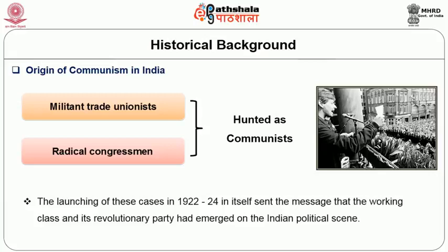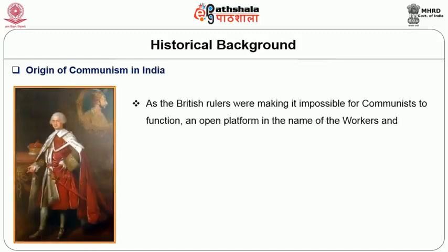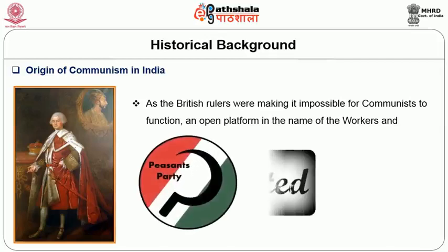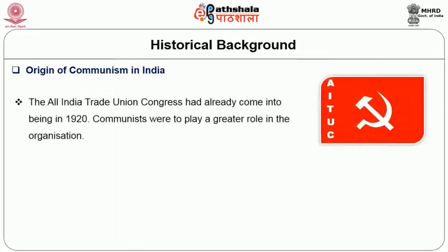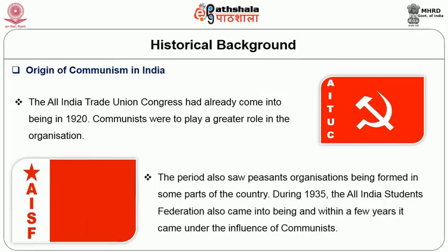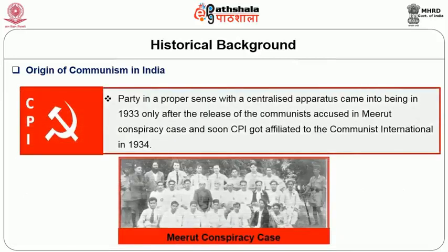The launching of these cases in 1922–24 in itself sent the message that the working class and its revolutionary party had emerged on the Indian political scene. As the British rulers were making it impossible for communists to function, an open platform in the name of the Workers and Peasant Party was created. The All India Trade Union Congress had already come into being in 1920, and communists were to play a greater role in the organization. The period also saw peasant organizations being formed in some parts of the country. Later during 1935, the All India Student Federation also came into being and within a few years it came under the influence of communists. The CPI as a party in a proper sense with a centralized apparatus came into being in 1933, and soon CPI got affiliated to the Communist International in 1934.